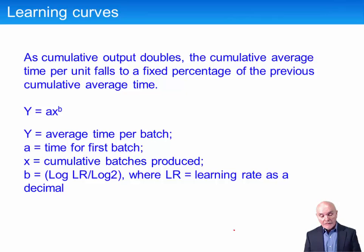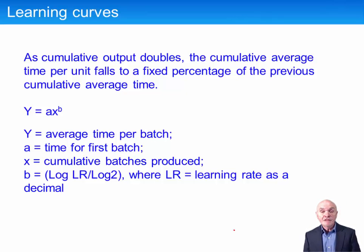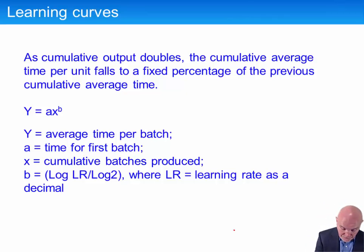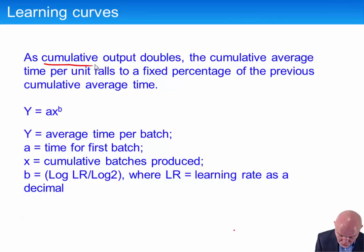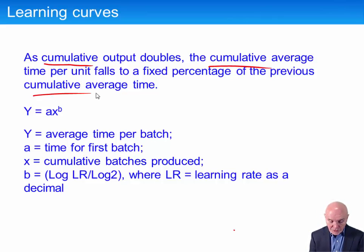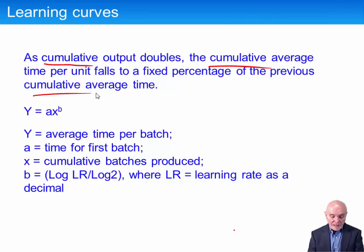The mathematical idea they came up with was that as the cumulative output doubles, the cumulative average unit time per unit falls to a fixed percentage of the previous cumulative average unit time. Running through this, we have the idea of cumulative output doubling, cumulative average unit time falling — it's all working on cumulatives and cumulative output from the start.